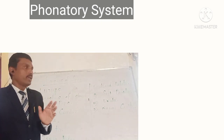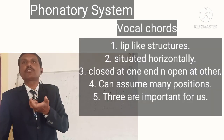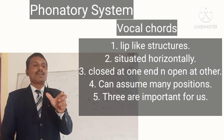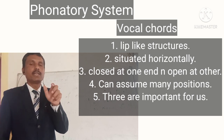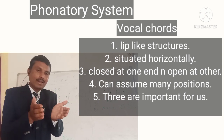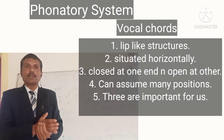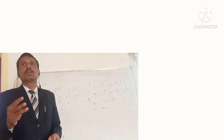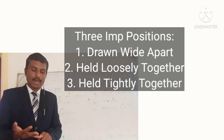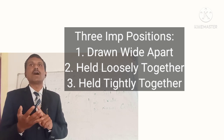Very important among these is the vocal cords. Vocal cords are the lip-like structures horizontally situated in our neck. As they are closed at one end and open at the other end, they can assume many positions — thousands of positions. For the production of speech sounds, three of the positions of vocal cords are said to be very important: vocal cords held tightly together, vocal cords held loosely together, and vocal cords held wide apart.